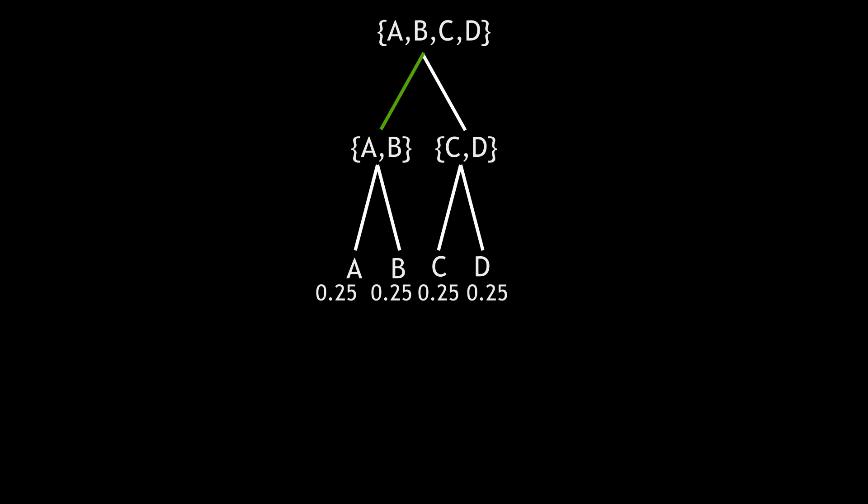Then ask, is it A or B? If yes, then is it A? If no, then is it C? We can see qualitatively that for each symbol, they would expect to ask two questions. We can calculate this by taking a weighted average, the probability of each symbol multiplied by the number of questions asked. Here, all of the probabilities are equal to one quarter, and each symbol takes two questions to get to. So summing this up, we get two questions per symbol.